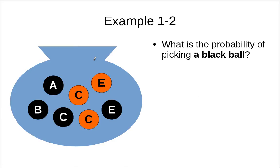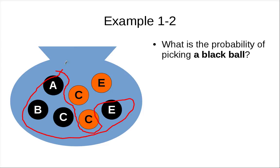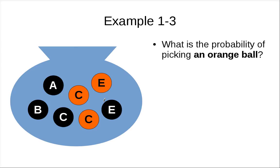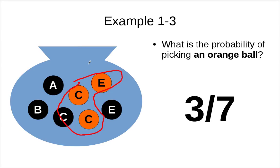What is the probability of picking a black ball? We have to look at this bag and find all the black balls — there are four of them. Therefore, the probability of picking a black ball is four over seven. And what is the probability of picking an orange ball? There are three orange balls, so you get three over seven.